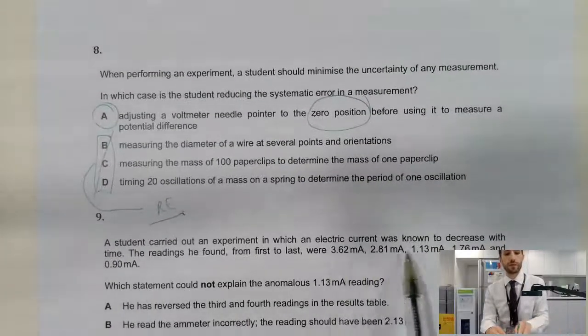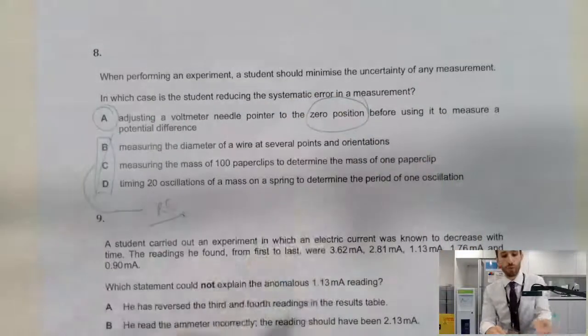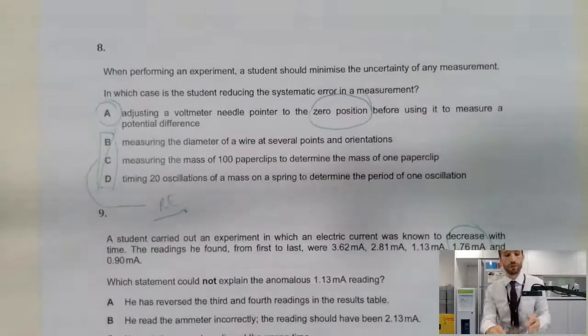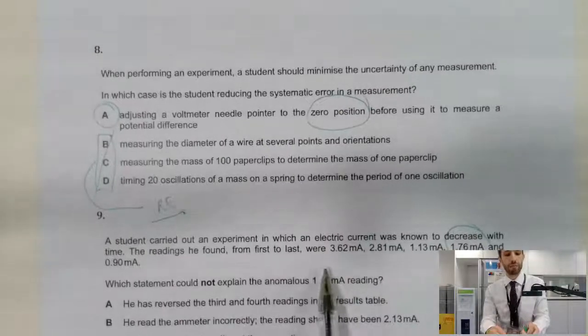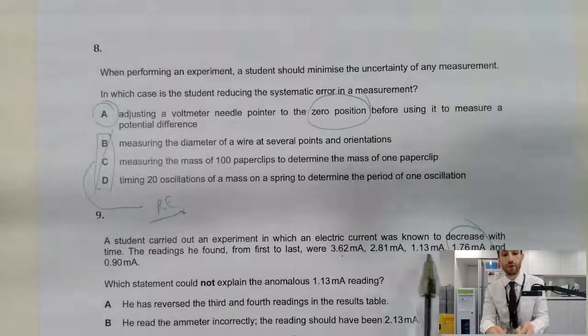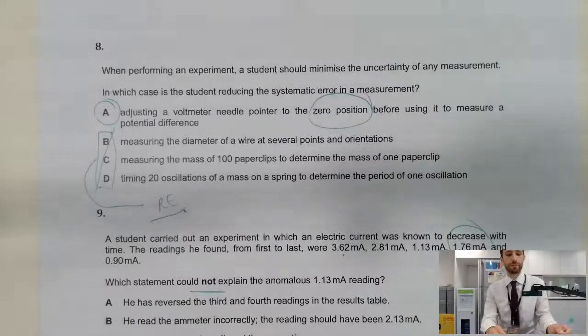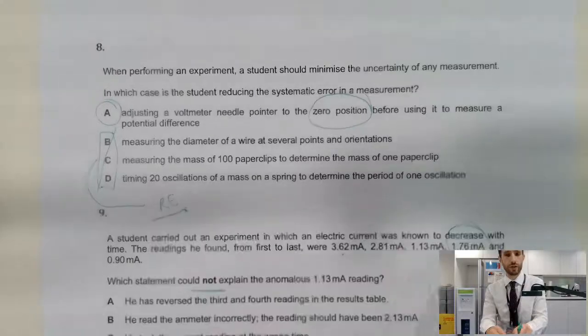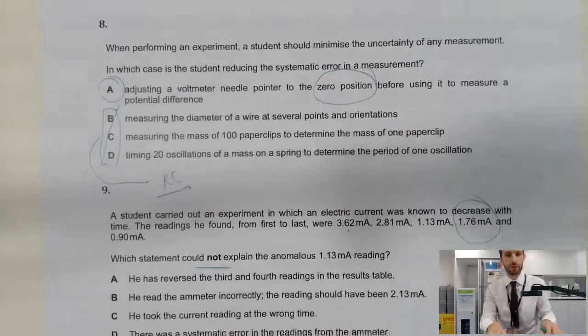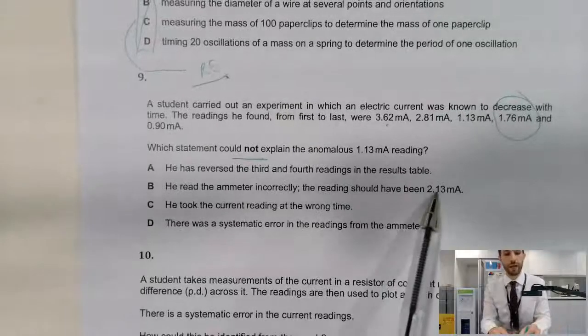Student carried out experiment. We've got some data and we want to explain the anomalous reading. We want to explain this result because we're noticing as time goes on, we've got current going down, down, down, up, and then down again, which couldn't explain the anomalous reading. Well, he could have reversed these two readings. So that is a possible answer. He read the ammeter incorrectly. Again, that could explain it. He took the current reading at the wrong time.